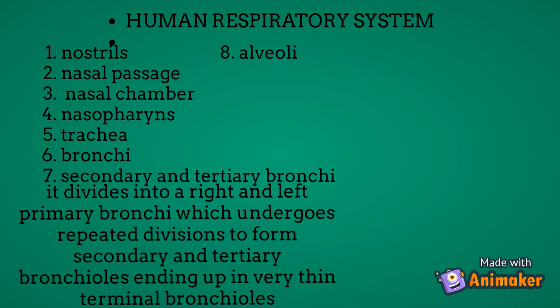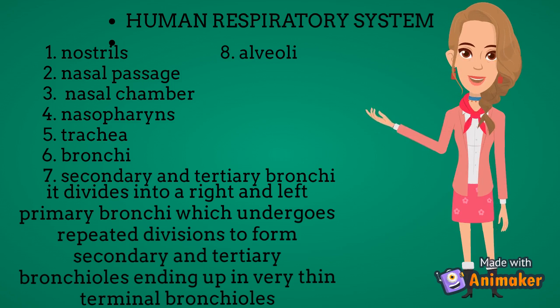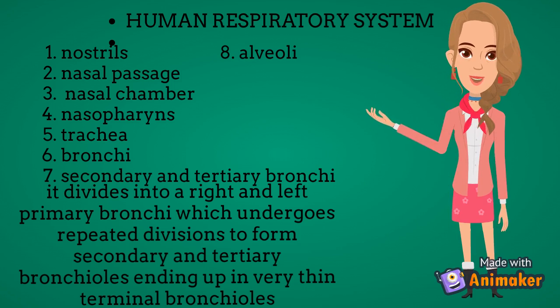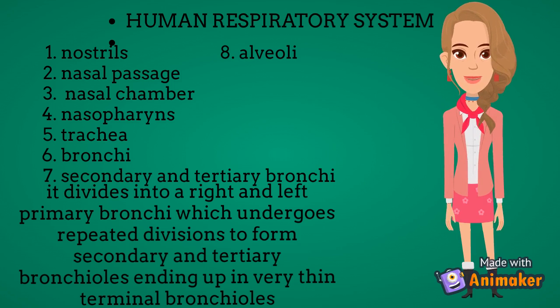The human respiratory system consists of a pair of nostrils which open into the nasal chamber through the nasal passage. The nasal chamber opens into the nasopharynx, which is a portion of the pharynx. The nasopharynx opens through the glottis into the trachea.